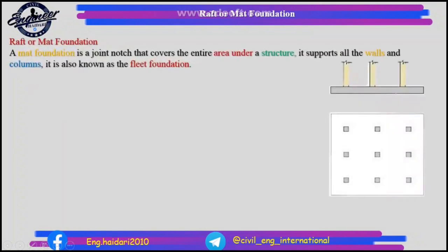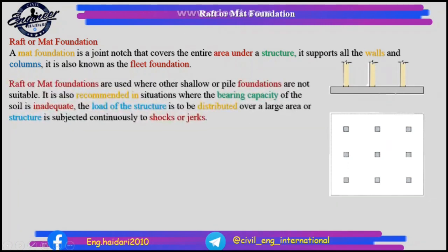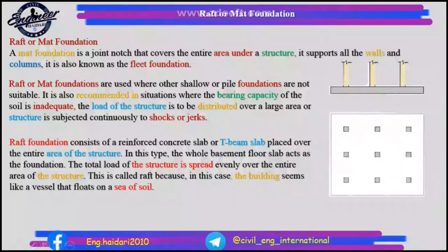Raft or mat foundation: a mat foundation is a joint slab that covers the entire area under a structure, supporting all the walls and columns. It is also known as the raft foundation. Raft or mat foundations are used where other shallow or pile foundations are not suitable — for instance, where the bearing capacity of the soil is inadequate, the load needs to be distributed over a large area, or the structure is subjected to continuous shocks or jerks. Raft foundation consists of a reinforced concrete slab or T-beam slab placed over the entire area. This is called raft because the building seems like a vessel floating on a sea of soil.